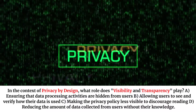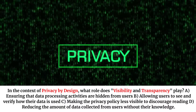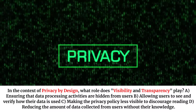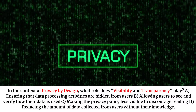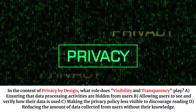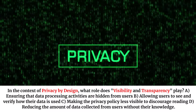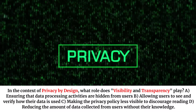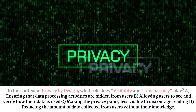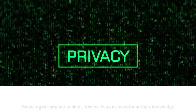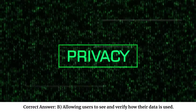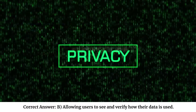In the context of privacy by design, what role does visibility and transparency play? A. Ensuring that data processing activities are hidden from users. B. Allowing users to see and verify how the data is used. C. Making the privacy policy less visible to discourage reading. D. Reducing the amount of data collected from users without their knowledge. Correct answer: B. Allowing users to see and verify how the data is used.